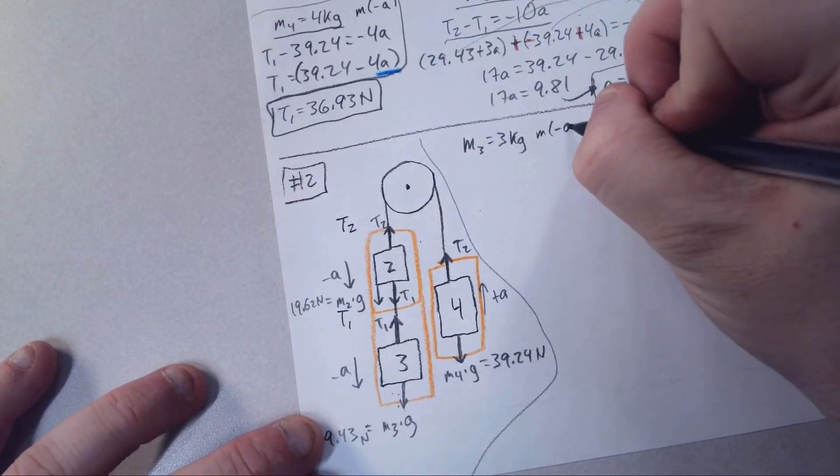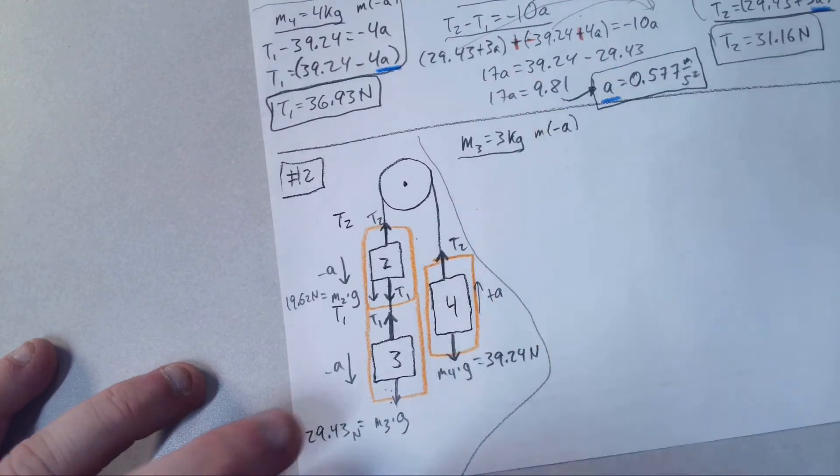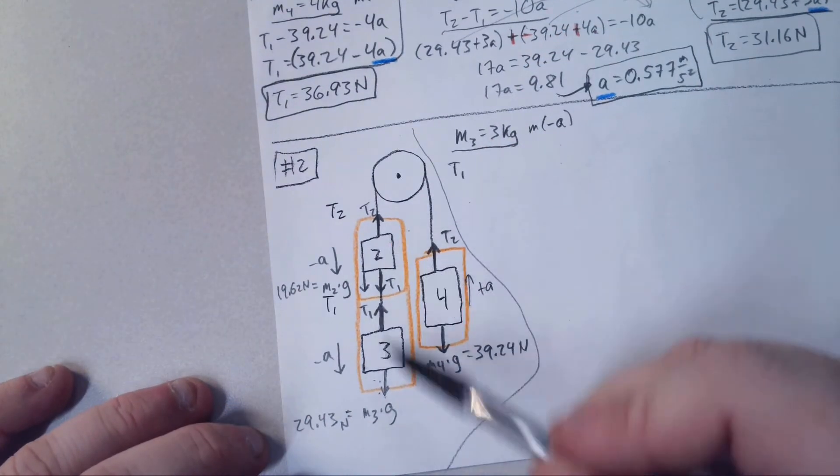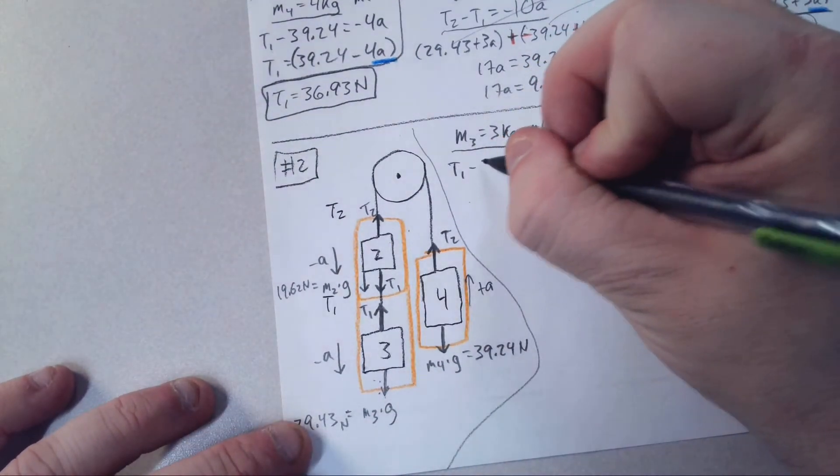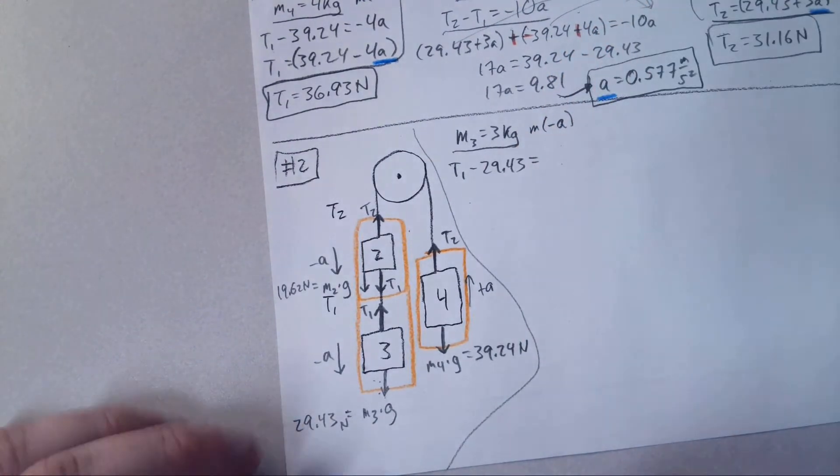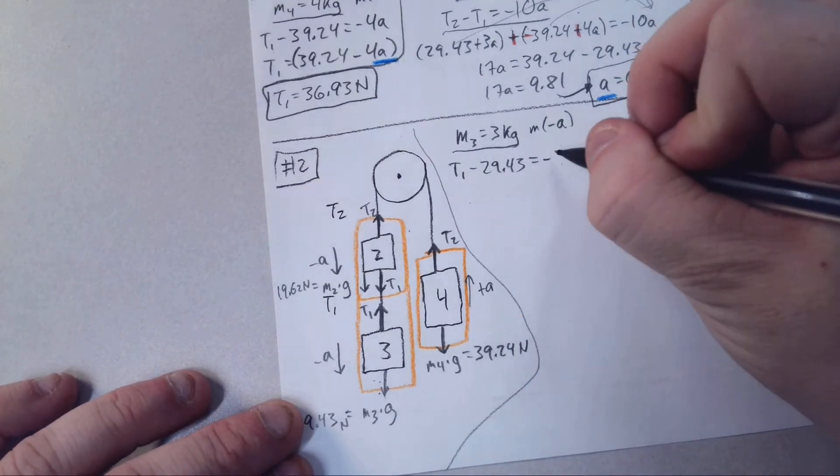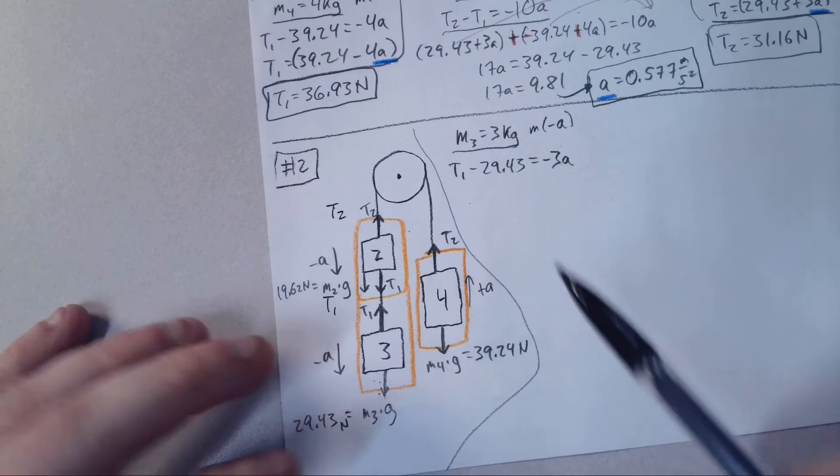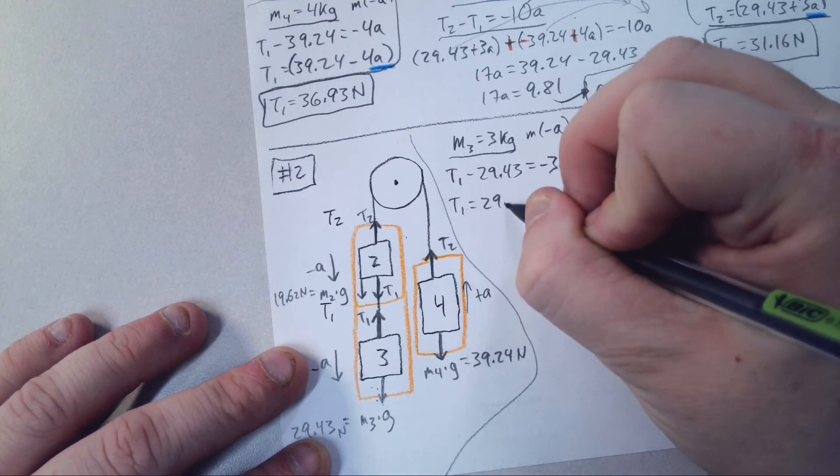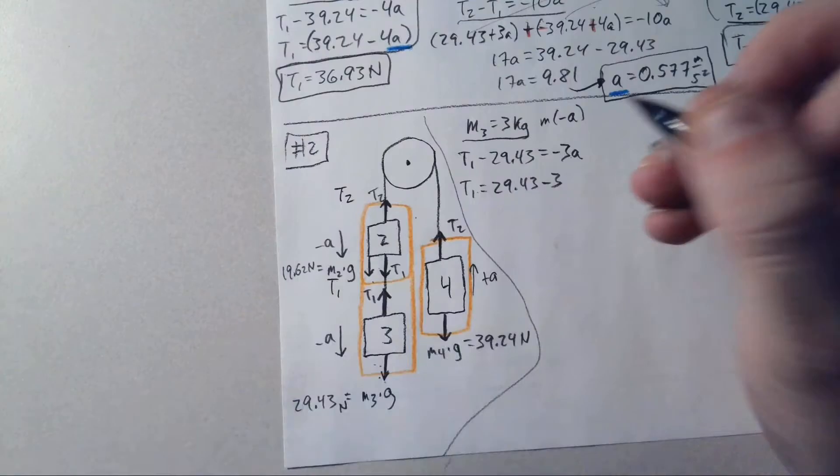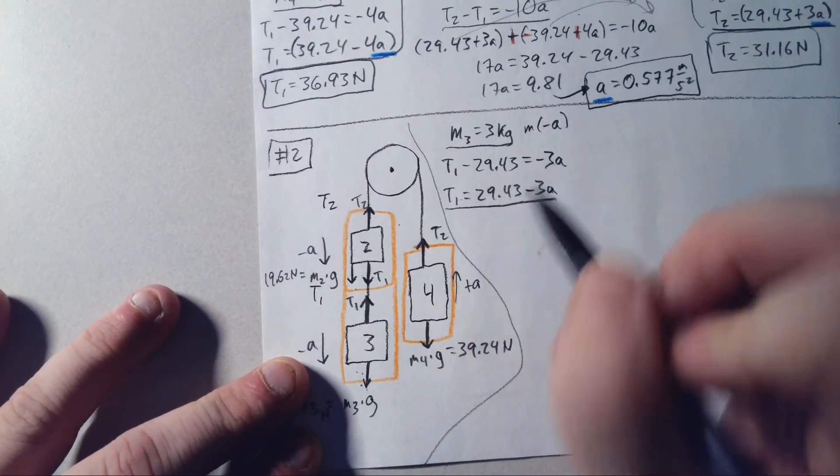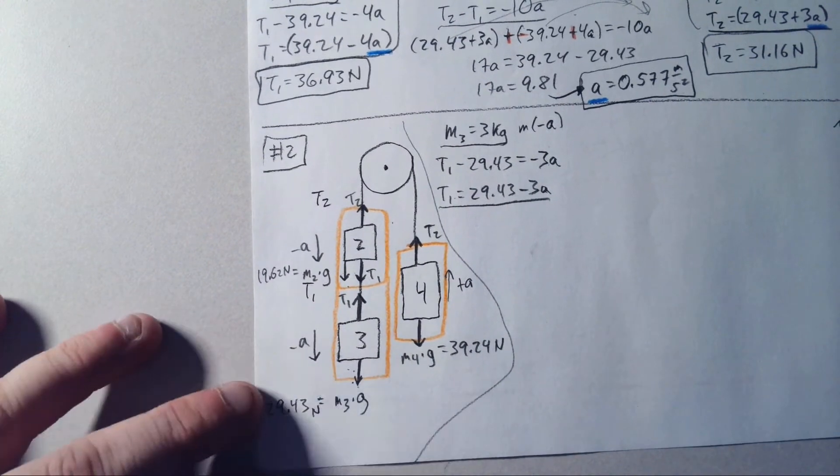3 kilograms is going down, so we're going to remind ourselves it would be M times negative A. Up minus down. Up is T1. Down, minus 29.43. Equals M times negative A, 3 times negative A, or negative 3A. We're going to go ahead and push that over to the other side by adding that. So T1 is 29.43 minus 3A. There's T1. We'll go ahead and leave it there as we can.